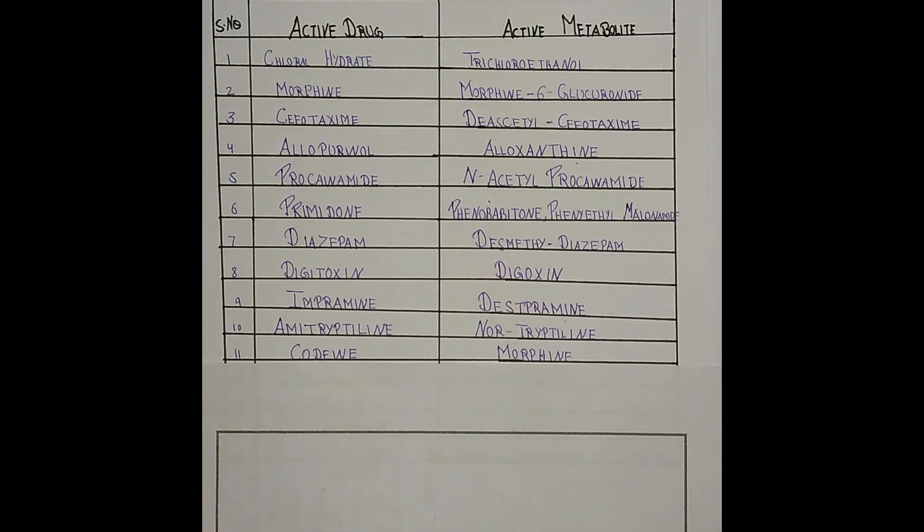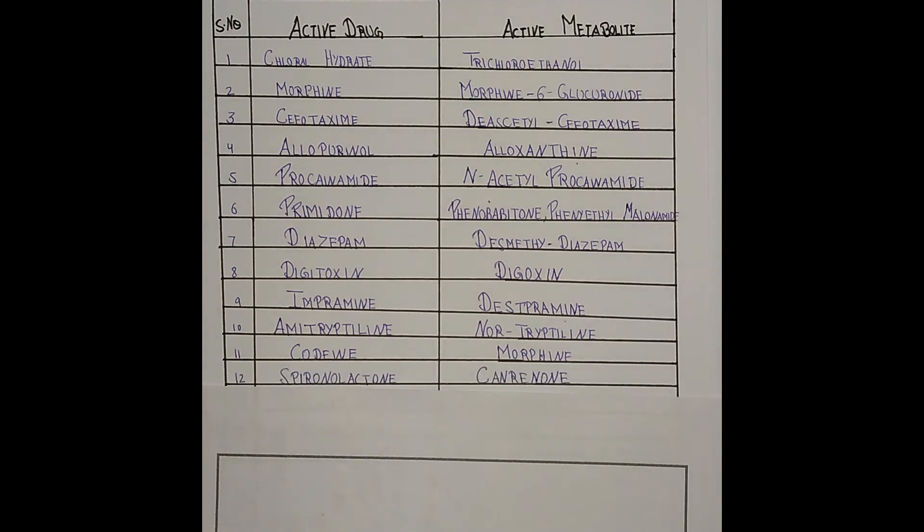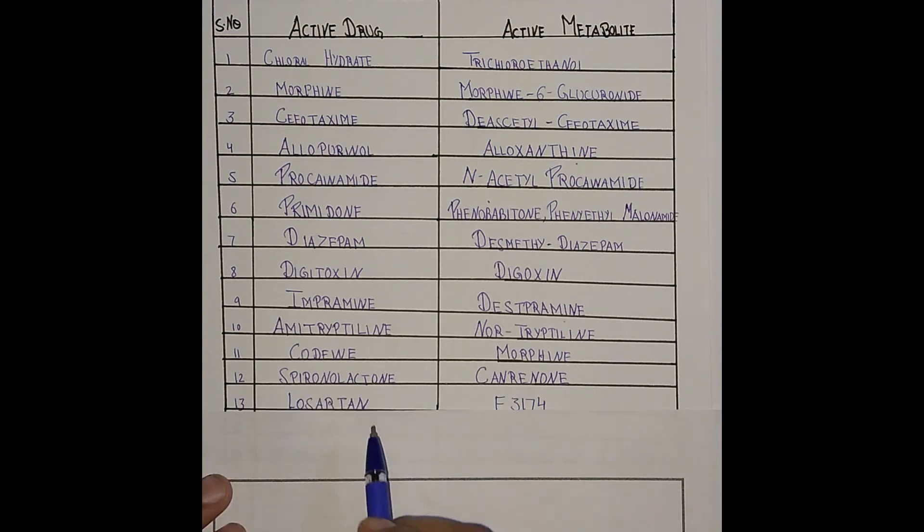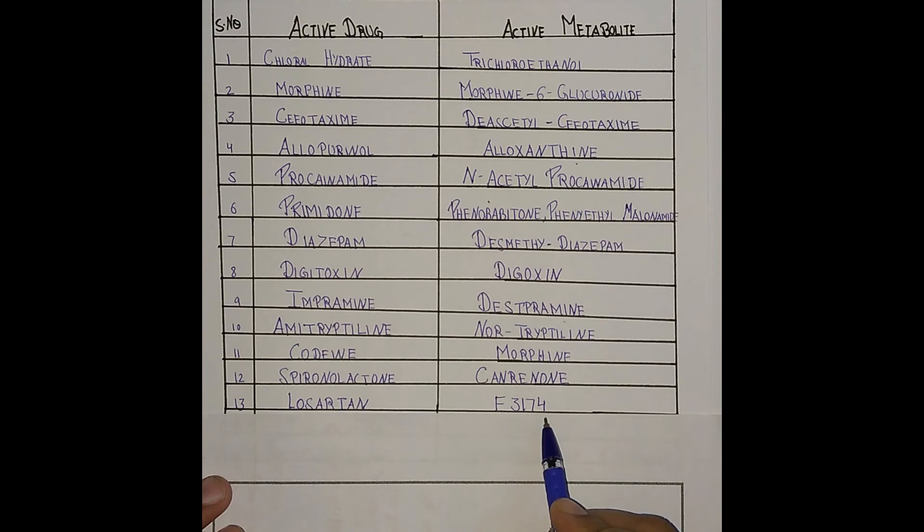Sometimes a very basic question is asked: codeine has the active metabolite morphine. And it is also important that spironolactone has an active metabolite canrenone. Next is losartan. Losartan has an active metabolite E-3174.